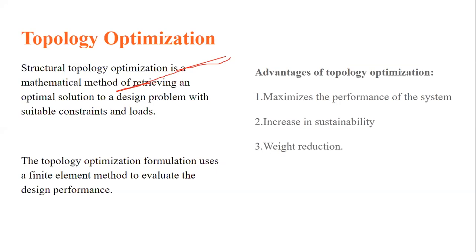Topology optimization uses the finite element method to evaluate design performance. The basic advantages are: it maximizes the performance of the system by reducing stress in the geometry, it increases sustainability so the component can be used for a longer period with the same maintenance, and it achieves weight reduction by excluding minimally stressed regions from the material.